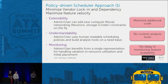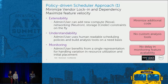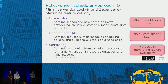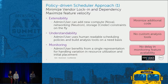Mapping these to the policy-driven approach: our goal is to minimize vendor lock-in and dependency while maximizing feature velocity — not a six-month release cycle. Number one is extensibility: how can the admin or the user add new capabilities — not just compute but storage, Cinder or Neutron constraints — on the fly and get them to deployment quickly, while minimizing additional code we write. The next point is understandability: all human-readable scheduling policies so that analysis tools can be built on a need basis without custom tools.